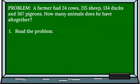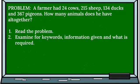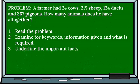You can read that problem at least three times to get a better understanding. So let's read it one more time: A farmer had 24 cows, 215 sheep, 124 ducks, and 367 pigeons. How many animals does he have altogether? Now let's examine for keywords, information given, and what is required. Then we're going to underline the important facts.